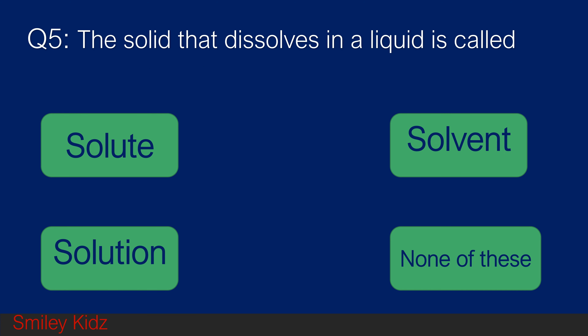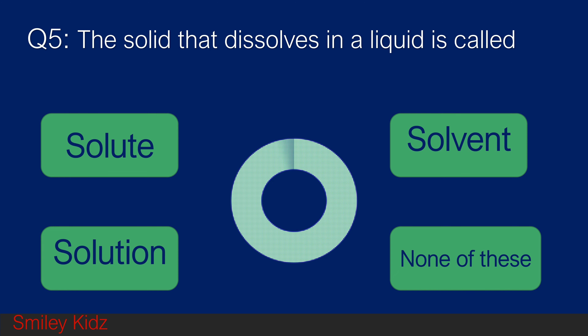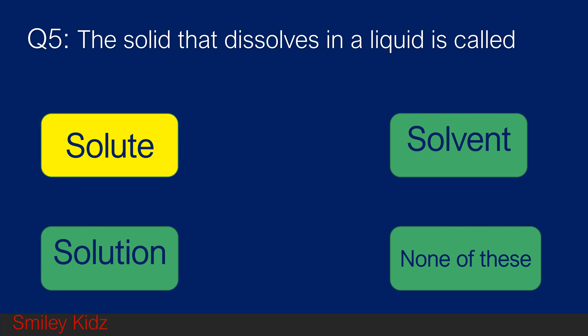Question number 5. The solid that dissolves in a liquid is called: option A solute, option B solvent, option C solution, and option D none of these. Your time starts now. And your time is up. The right answer is solute. The solid that dissolves in a liquid is called solute.